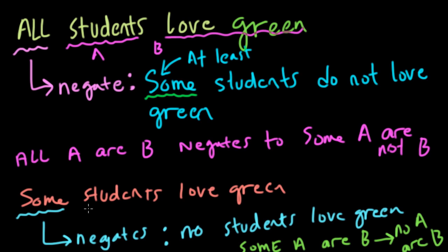What that becomes is no A are B. And A, of course, is students. So A, students, some students, some A, love green. So some A are B. Well, then no students are B. That's the negation there. All right, hope this helped.